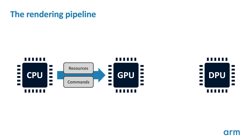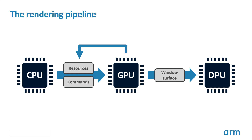Once the GPU has finished processing, it emits a completed frame or window surface which can be handed off to the display processor for presentation to the user. While this pipeline is functional, it would result in some pretty boring output frames. To make more interesting rendering algorithms, it is possible for the GPU to modify the content of its own resources, which can then be consumed by later rendering operations.